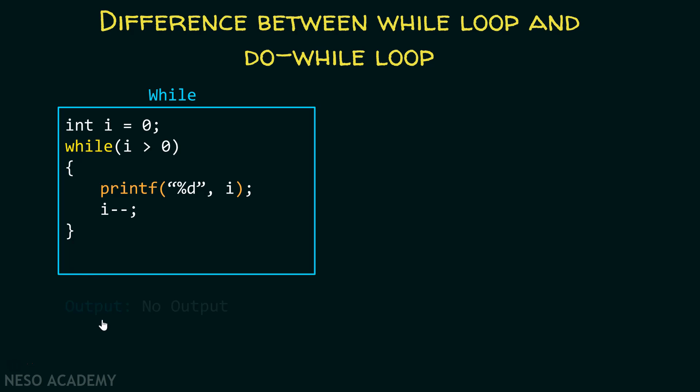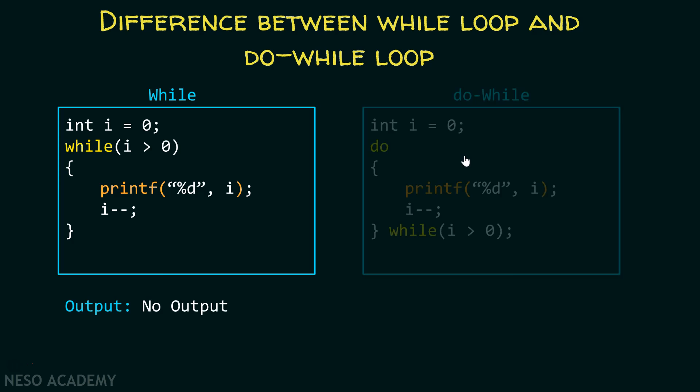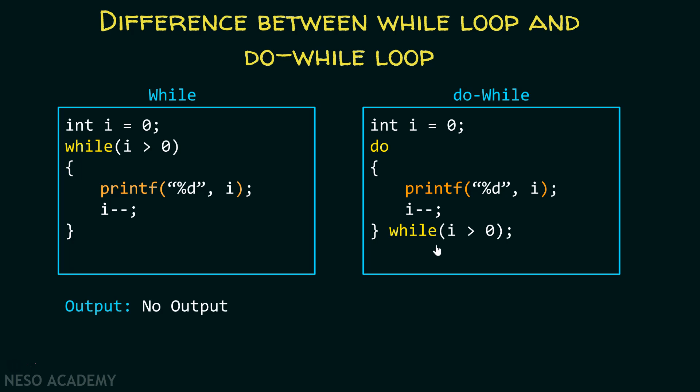Here I have written a program using a do while loop. This is how a do while loop looks: first you write do, then after that you write while. This means that initially you won't check the condition. After executing the body of the loop, you will check the condition. In a while loop, you first check the condition then evaluate the body. In a do while loop, you first evaluate the body of the loop and then check the condition.